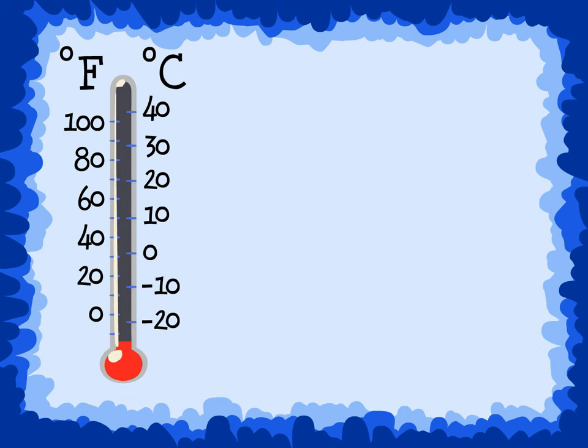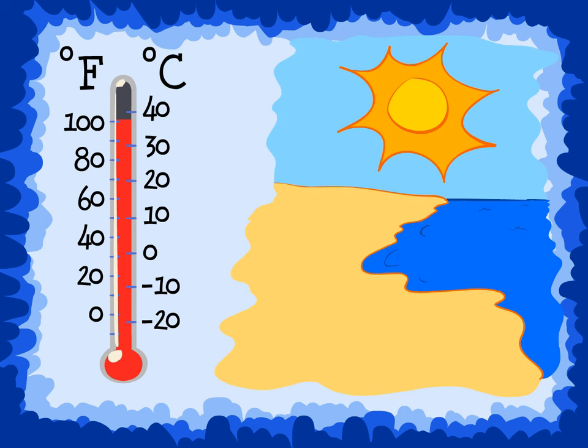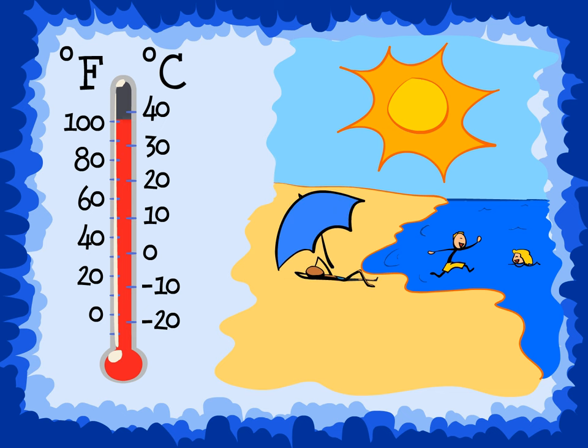The amount of red you see on a thermometer shows how hot or cold it is outside. When we see a tall red line, this means that the temperature is very warm or hot. When the temperature is hot, we can go swimming, we can go to the beach, and we would wear shorts and short-sleeved shirts.